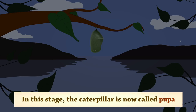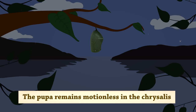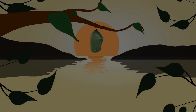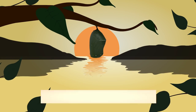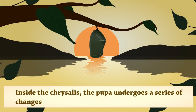In this stage, the caterpillar is now called pupa. The pupa remains motionless in the chrysalis. Inside the chrysalis, the pupa undergoes a series of changes.